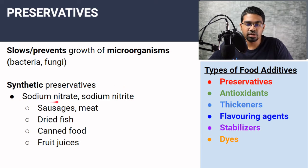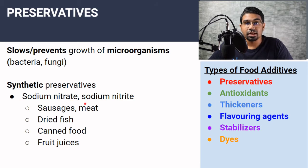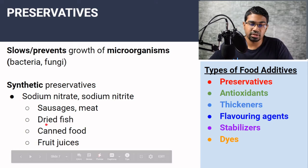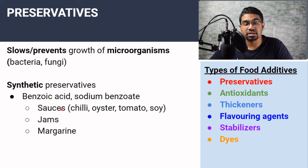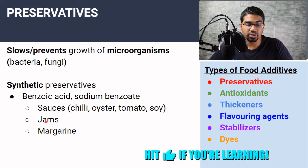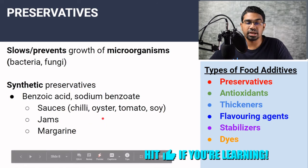There are many synthetic preservatives. Sodium nitrate and sodium nitrite are commonly used in sausages and meat — they keep the meat looking fresh as well. They are also used in dried fish, canned fruit, and fruit juices. We have benzoic acid or sodium benzoate, commonly used in sauces such as chili sauce, ketchup, oyster sauce, soy sauce, jams, and margarines.